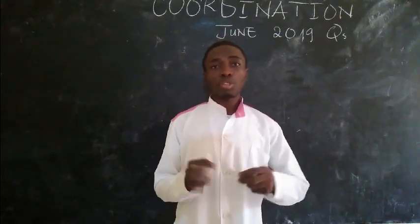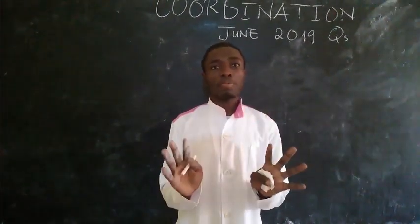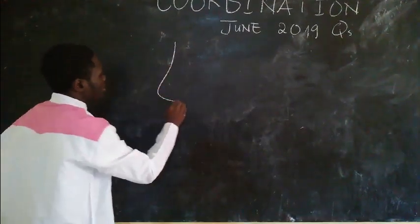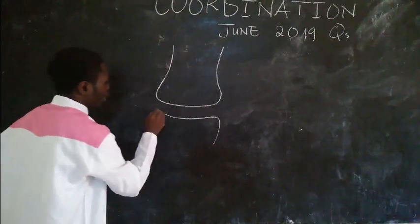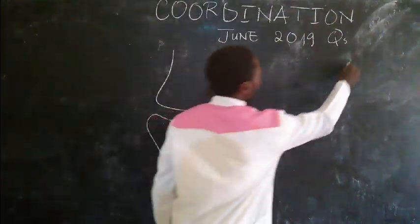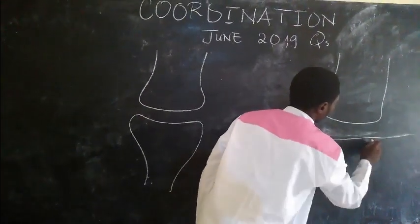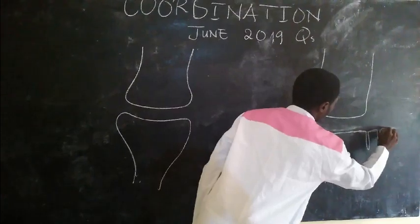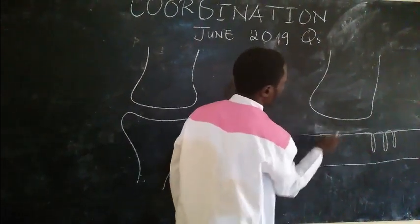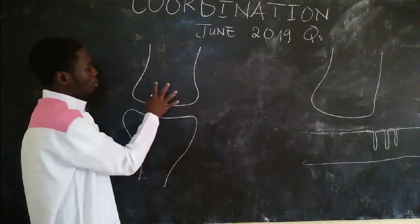I'm going to demonstrate this with some diagrams. There are just a few steps and it will be very clear. We have the junction between a neuron and a neuron — that's a normal synapse — and the junction between a neuron and a muscle membrane, which we call the neuromuscular junction. The neuron that comes before is called the presynaptic neuron, and the one that comes after is the postsynaptic neuron.